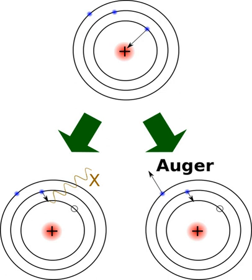Electron capture, K-electron capture, also K-capture, or L-electron capture, L-capture, is a process in which the proton-rich nucleus of an electrically neutral atom absorbs an inner atomic electron, usually from the K- or L-electron shell.